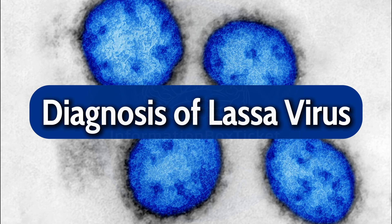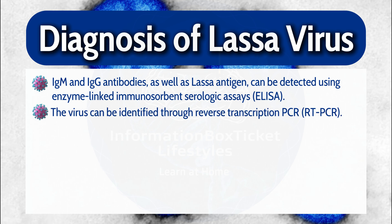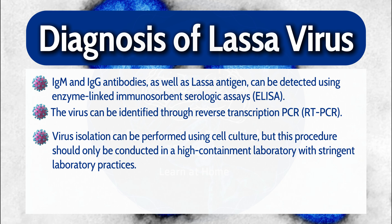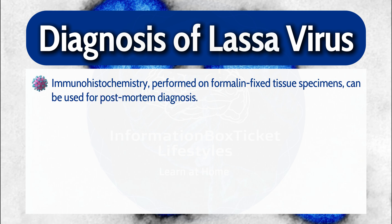Diagnosis of Lassa Virus. IgM and IgG antibodies, as well as Lassa antigen, can be detected using enzyme-linked immunosorbent serologic assays. The virus can be identified through reverse-transcription PCR. Virus isolation can be performed using cell culture, but only in a high-containment laboratory with stringent practices. Mice and guinea pigs have been evaluated as models for LASV infection. Immunohistochemistry on formalin-fixed tissue specimens can be used for post-mortem diagnosis.